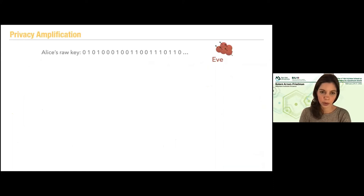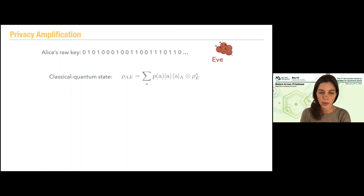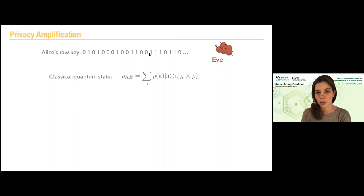If we write this quantum state, we can write it as what we call a classical-quantum state. It's a mixed state over Alice's register and the raw data and Eve's quantum state. We can write it as a convex combination over all possible keys Alice could have achieved in the protocol — the probability for every possible key, a classical state for each key (just bits in the standard basis), and for each classical state Eve holds some information, some quantum state correlated with the classical raw data that Alice holds. This is just a general way of writing any classical-quantum state.